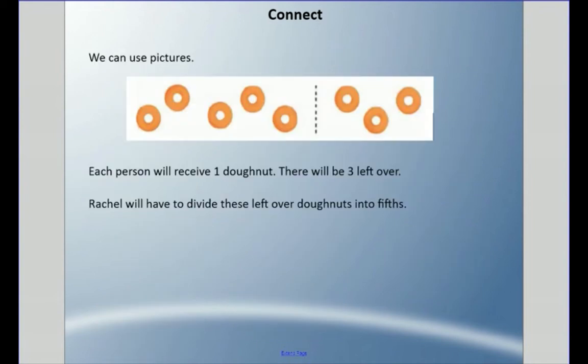The first thing we're going to do is use pictures. These are donuts, and you can see we have five donuts and three donuts. The five means each person gets one whole donut, but the problem is we have three extra donuts left over.